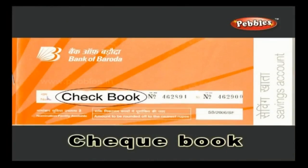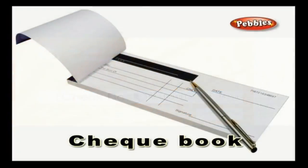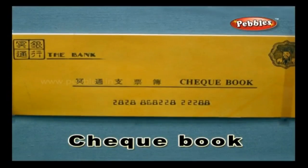Checkbook. A checkbook is a collection of check leaves that are serially numbered. This is issued by the bank on request by the account holder.